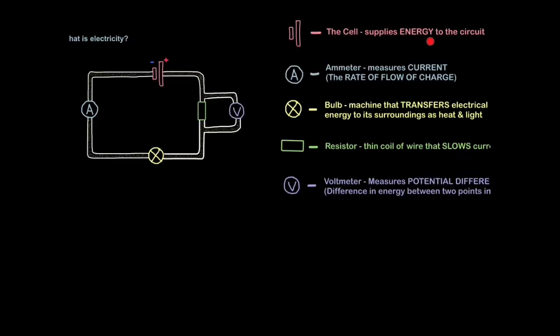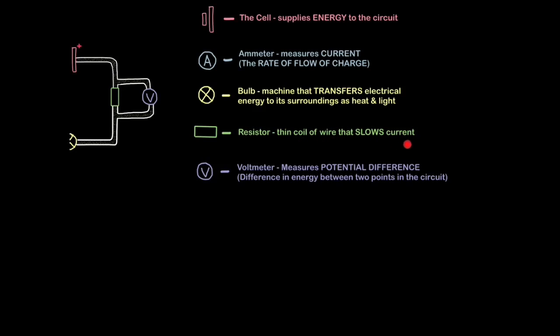So just to recap, remember the cell supplies energy to the circuit. The ammeter measures the current, the rate of flow of charge. Remember electrons carry charge and they flow through the wires and the ammeter just measures the rate of flow. The bulb is a machine or an appliance that transfers electrical energy to its surroundings as heat and light. A resistor is a thin coil of wire that slows current down, and a voltmeter measures potential difference, the difference in energy between two points in the circuit. In an exam they really do commonly refer to voltage as potential difference. So please make sure you're aware they mean exactly the same thing.